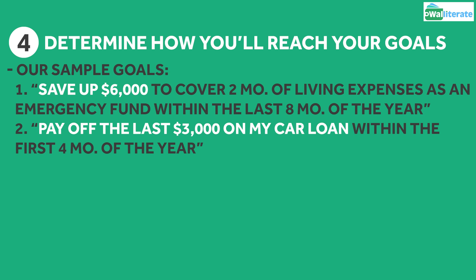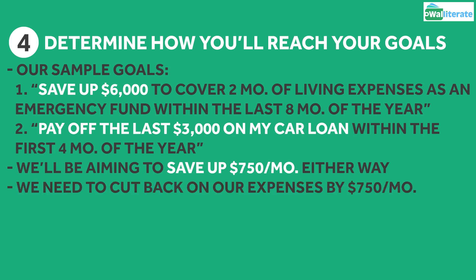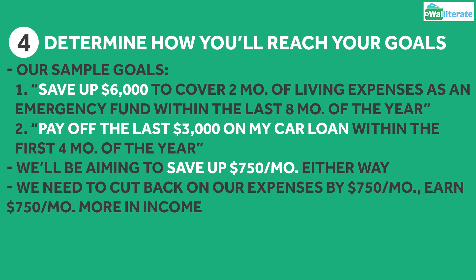With either of our sample goals, we'll be looking at putting away $750 a month towards our savings fund. So we'll either need to cut back on our expenses by $750 a month, earn an extra $750 a month in income, or a combination of the two.